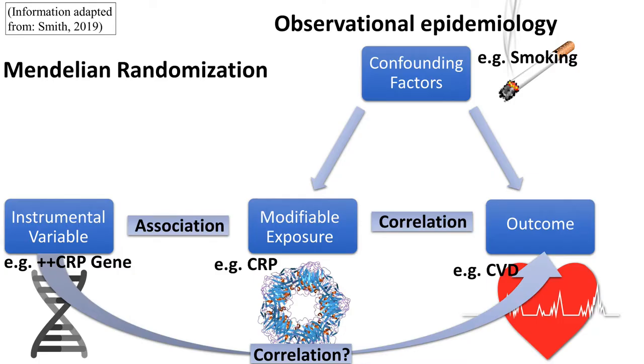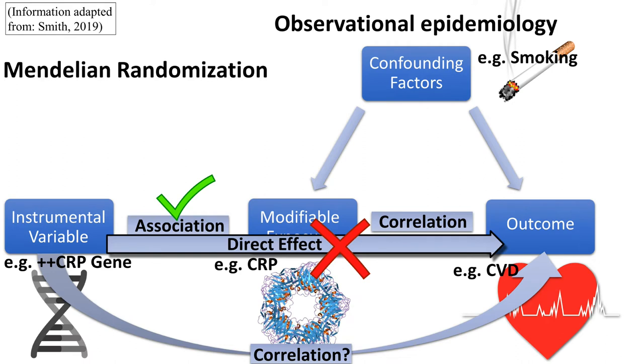But like any methodology, it also has its limitations. And in this case, its validity rests on three main assumptions. Firstly, that the instrumental variable is actually associated with the modifiable exposure. This is also known as the relevance assumption. Secondly, that it has no direct effect on the outcome, the independence assumption. And thirdly, that it has no effect on the outcome except via the exposure, that there are no other intermediary factors at play. And this is called the exclusion restriction assumption.